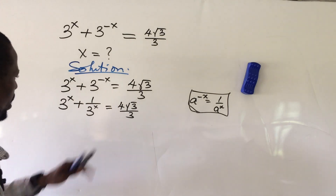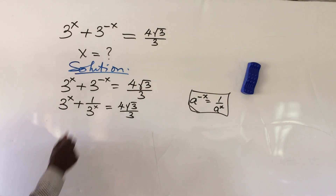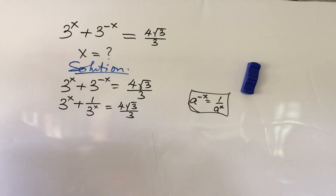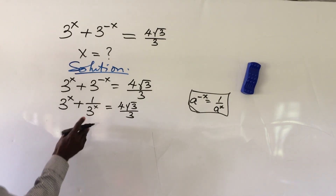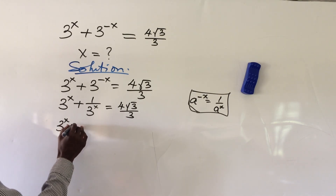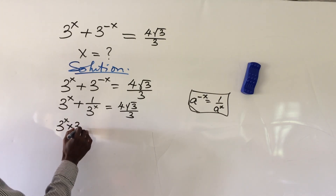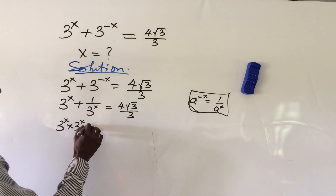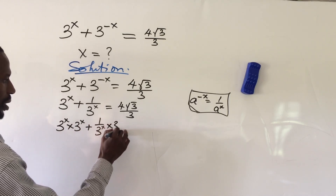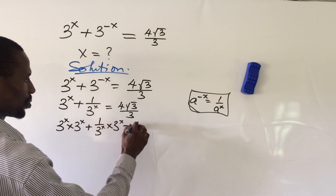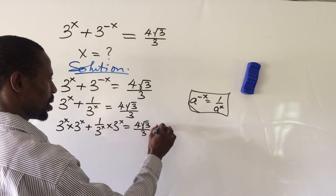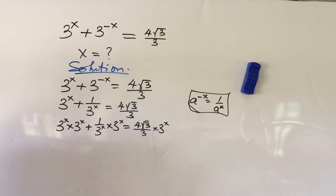From here, let's eliminate this 3 to the power of x in the denominator by multiplying all through by 3 to the power of x. So if we do that, we're going to have: 3 to the power of x multiplied by 3 to the power of x, plus 1 all over 3 to the power of x times 3 to the power of x, equals 4 root 3 all over 3 times 3 to the power of x.